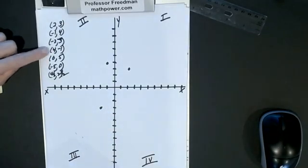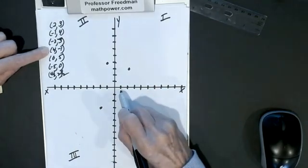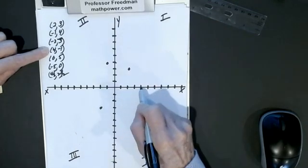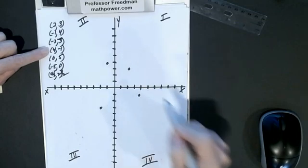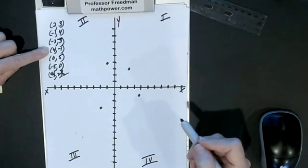Let's do four, negative one. x is four: one, two, three, four. Y is down, so it's negative one. Most of you are probably pretty good at plotting points.